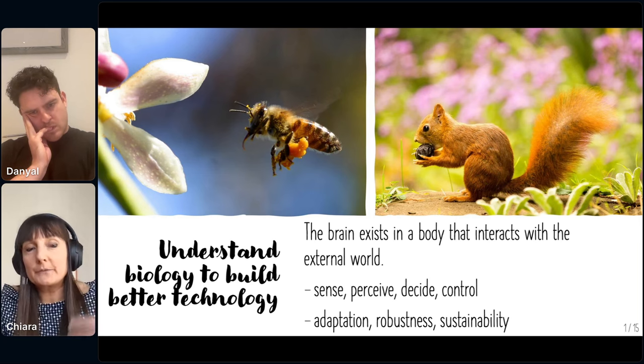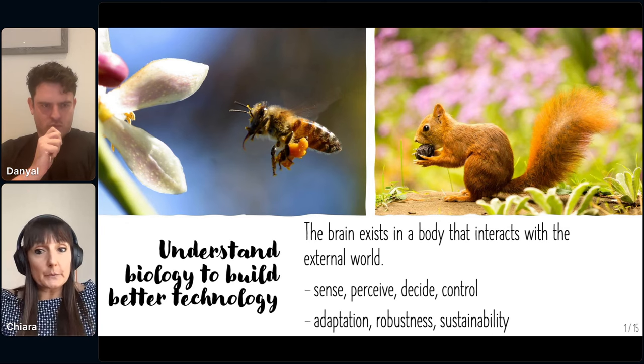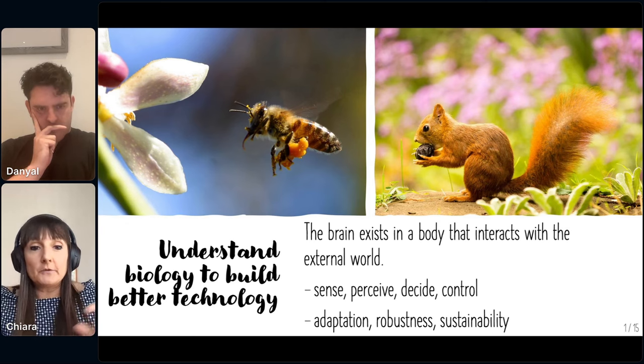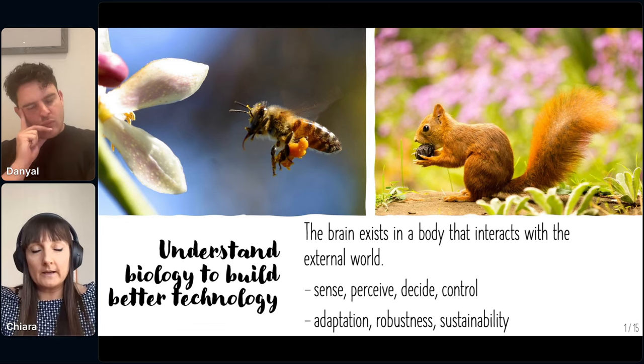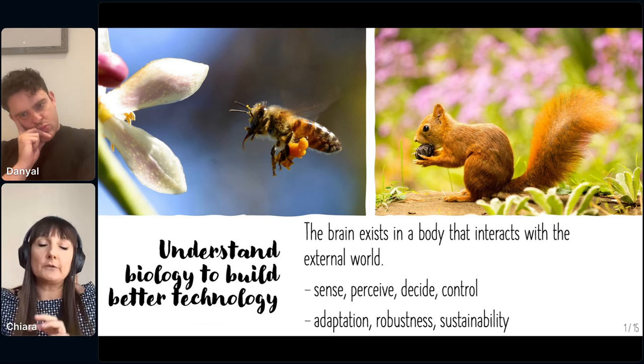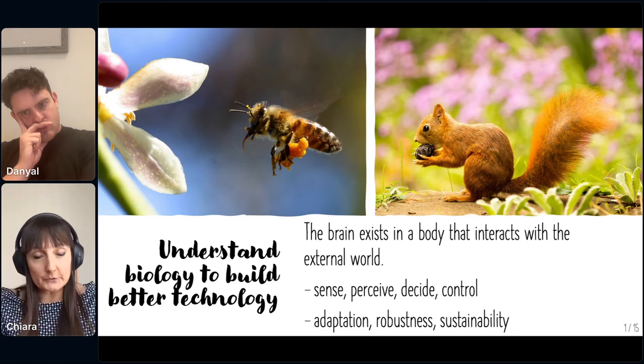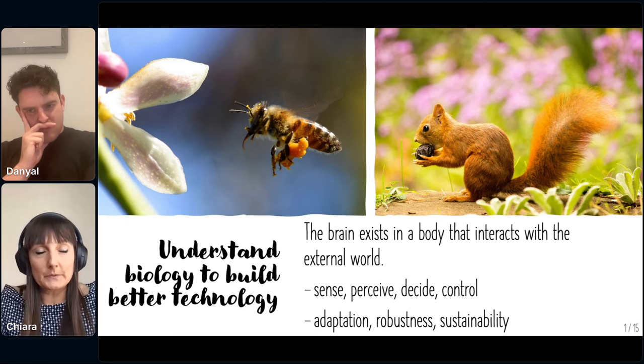So if we take a very simple view of an artificial system, it has to sense, perceive and therefore interpret what it gets from the sensors, take decisions, and control to achieve a certain goal. In the presentation, I'm going to give you a few examples of what we do in the lab along these four different themes: sensing, perception, decision, and control. And then I will conclude with some future look of where I think we should go.